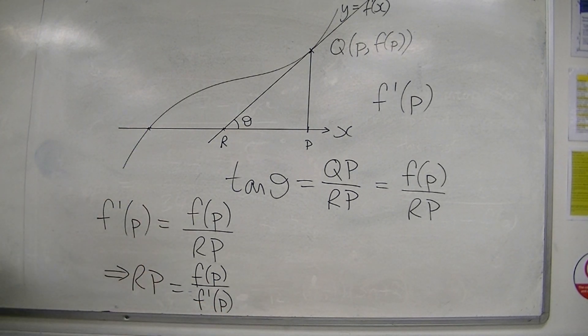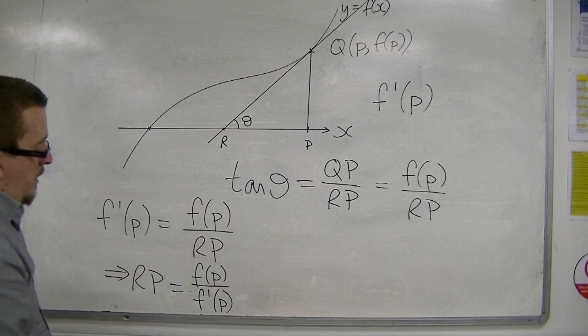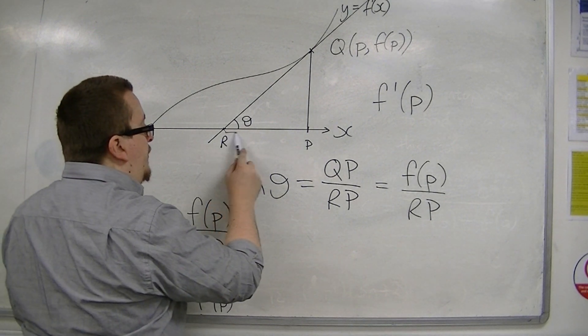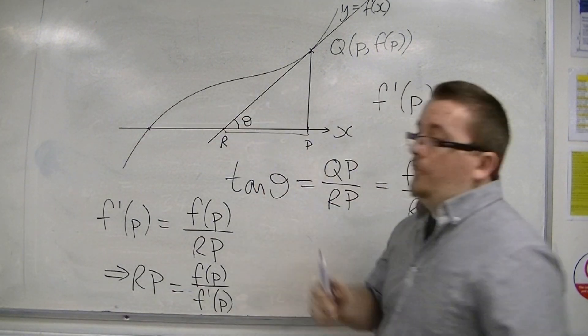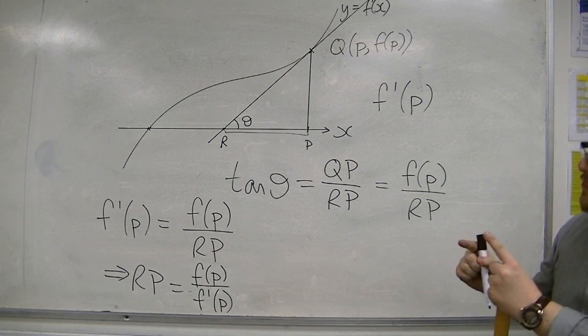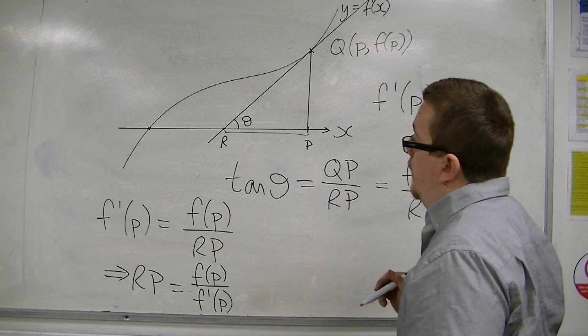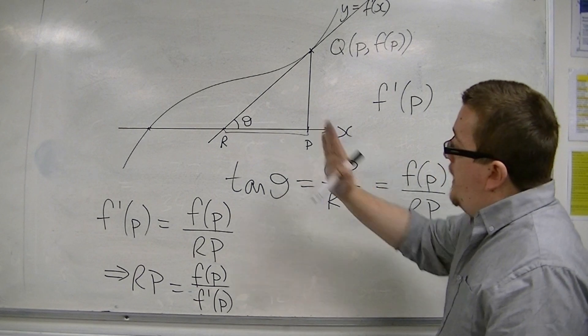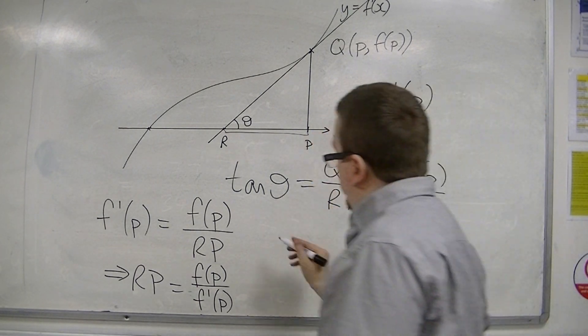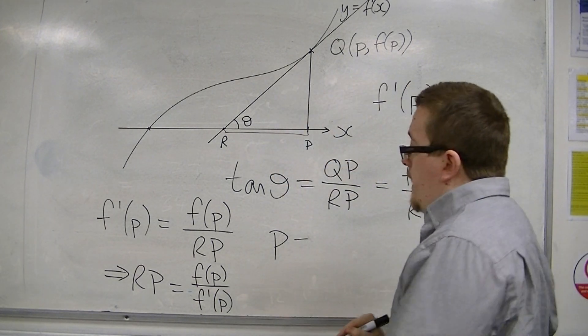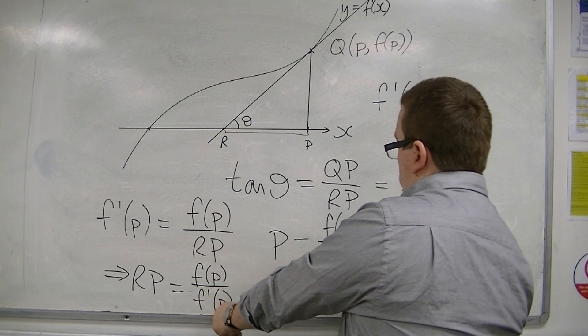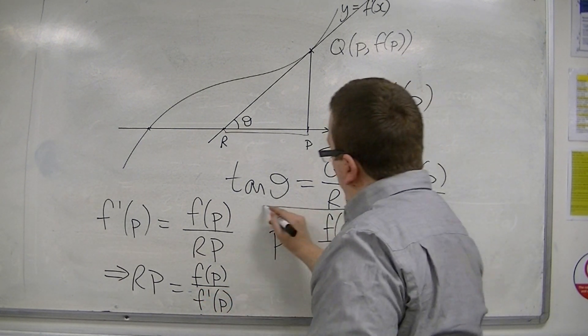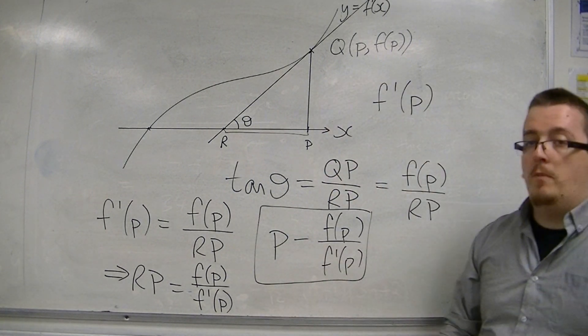Just through rearranging that equation. So if I've got that distance now, I can then say that an estimate to my root, my approximation, will be P on the x-axis take away RP. So this will be the approximation to my root.